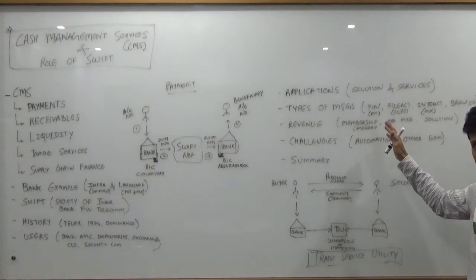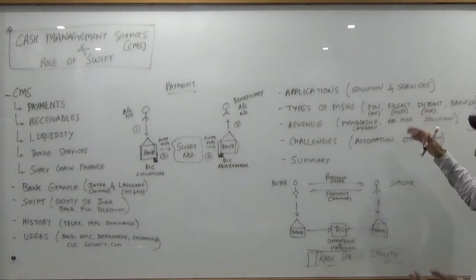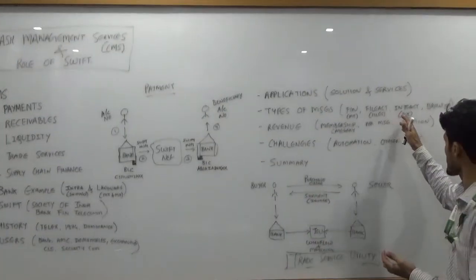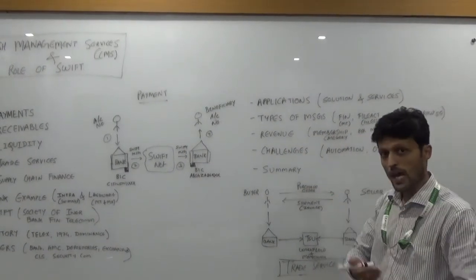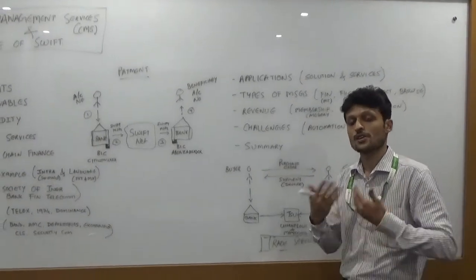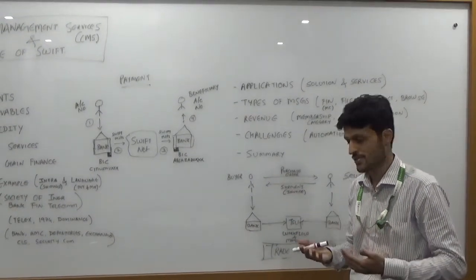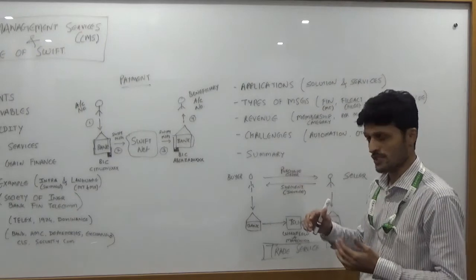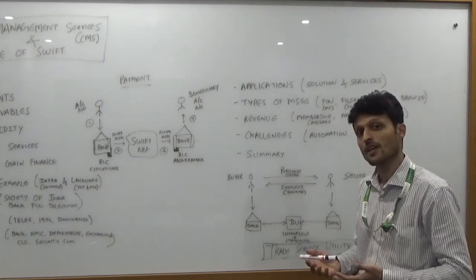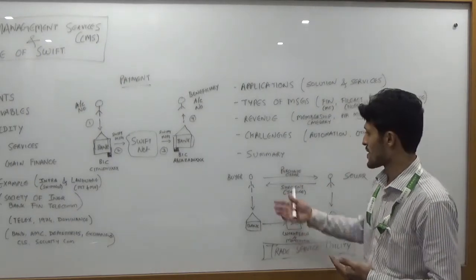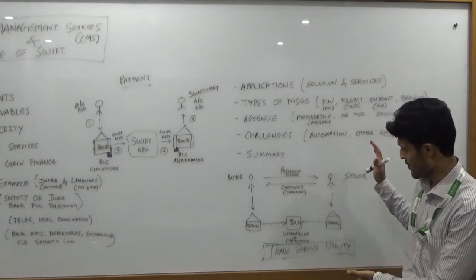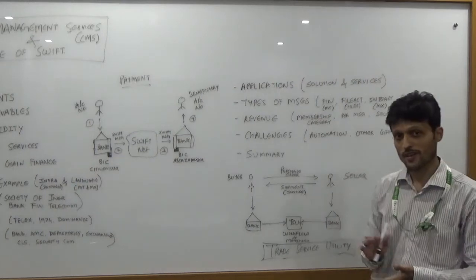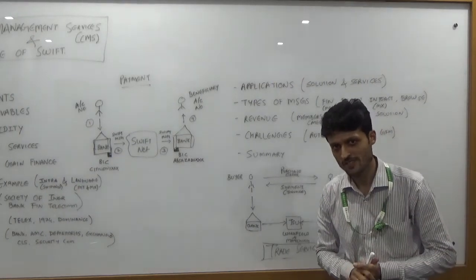The types of messages it is using like financial messages, different files for processing their payments, the MX or the XML messages and so on. The revenue model, how SWIFT earns revenue and keeps innovating new things. The challenges it is going to face and right now facing, how it is trying to overcome it. And that's it guys. I believe I have covered everything what I have to cover for today and I'm sure it has been an informative session. Thank you so much.